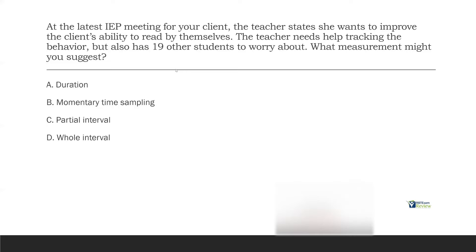Now we ask ourselves, what is the behavior of interest? What are we measuring? We're measuring the client's ability to read by themselves, and we want to increase that ability. If we're using a time sampling or interval measurement and we want to increase something, what's going to be ideal? If I'm measuring the client reading to themselves using momentary time sampling, am I going to get a real good indication of how well they're actually reading? No — because if my interval is one minute and I'm using momentary time sampling, I'm only looking at the client at the end of each minute, so it's going to be almost random.